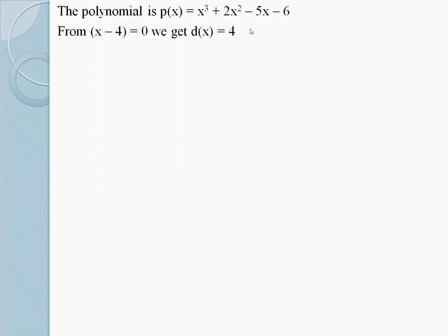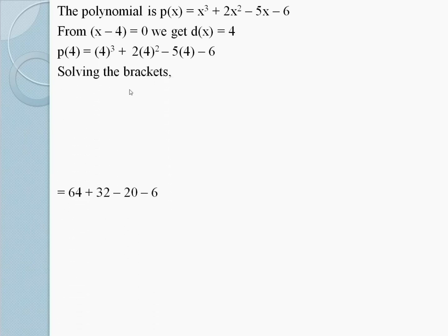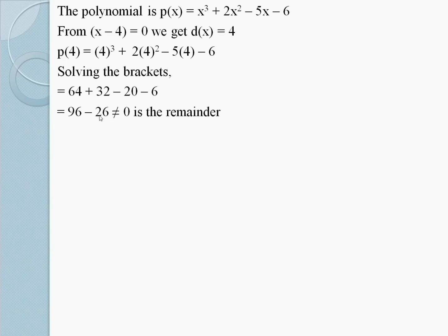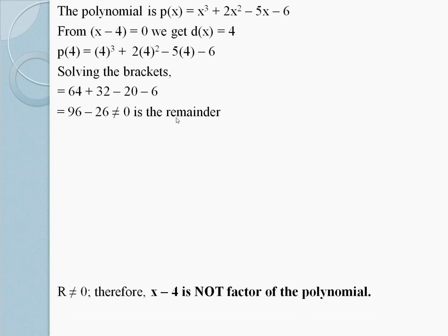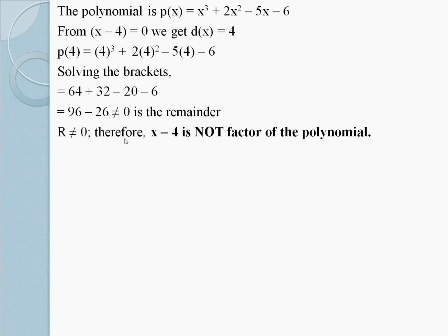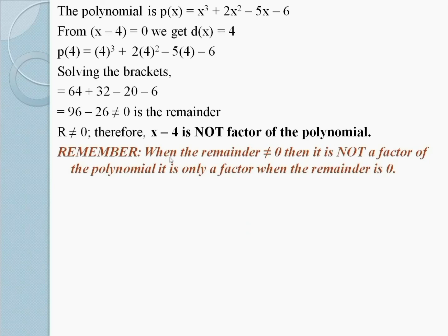The polynomial is P(x) = x³ + 2x² - 5x - 6. Replacing the value x = 4: P(4) = 4³ + 2(4)² - 5(4) - 6. Solving: 64 + 32 - 20 - 6 = 70, which is not equal to 0. Since r ≠ 0, therefore x - 4 is not a factor of the polynomial. Remember: when the remainder is not equal to 0, it is not a factor; it is only a factor when the remainder is 0.